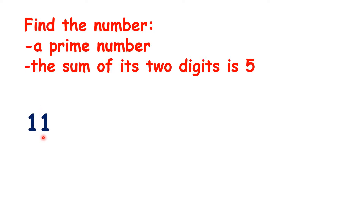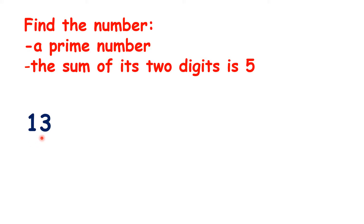Eleven is a prime number, but one plus one is two, so the sum of its digits isn't five. The next prime number is thirteen, but one and three make four. Seventeen is the next prime number, but its digits total eight.